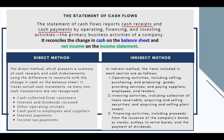In the indirect method, we categorize our cash flow activities into three: operating activities, investing activities, and financing activities. Operating activities include all cash flows from selling, purchasing, and producing goods, providing services, and paying suppliers, employees, and lenders. To make it simple, all transactions under your income statement — from cost of sales to operating expenses to interest expense down to tax expense — would be part of your operating activities. For the balance sheet, we include all the company's current assets and current liabilities, except for financing activities like notes payable.